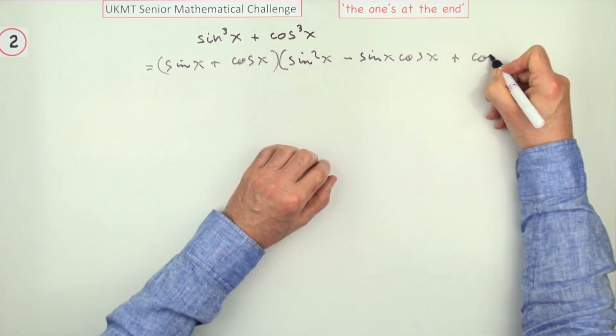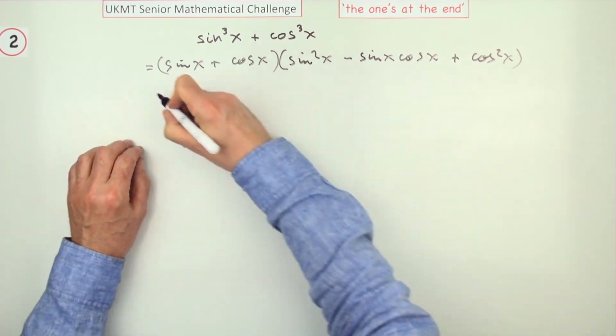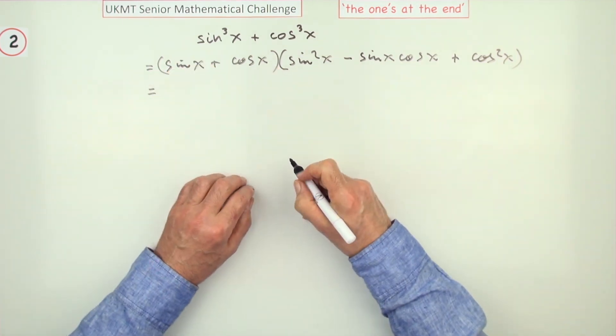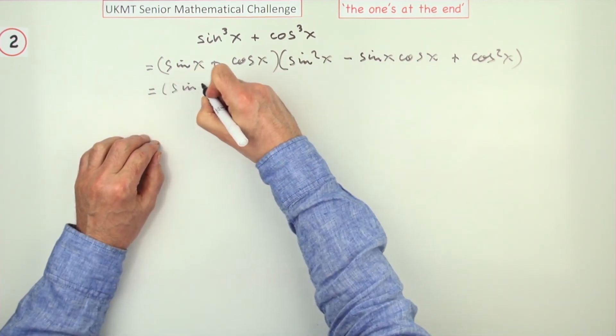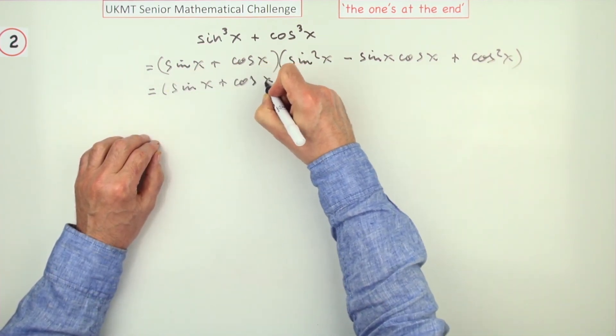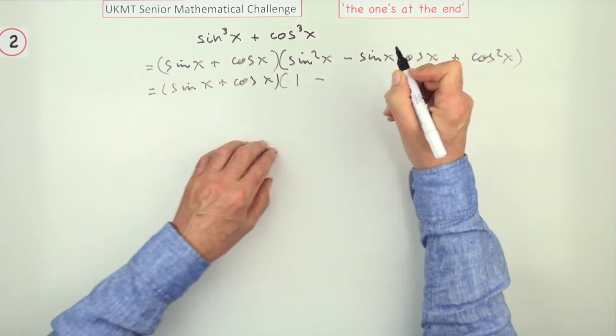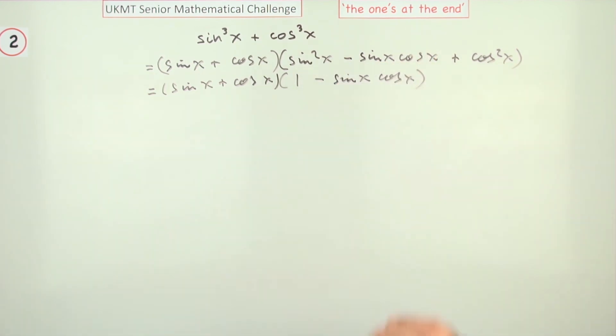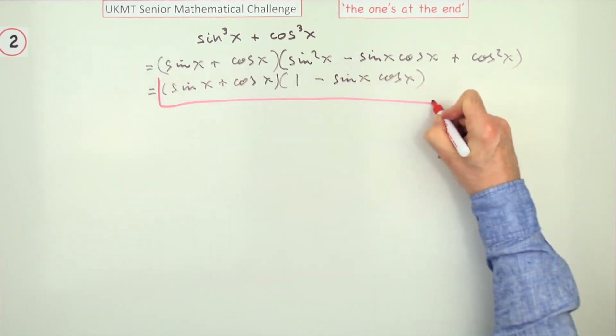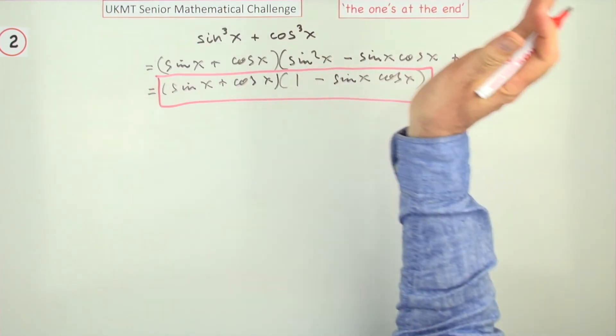And then the last one plus cos squared x. See that didn't take long if you knew that pattern. And then you say wait a minute, sine squared and cos squared makes one, so then you've just got sine x plus cos x times one minus and then sine x cos x. And there you are. Job done.